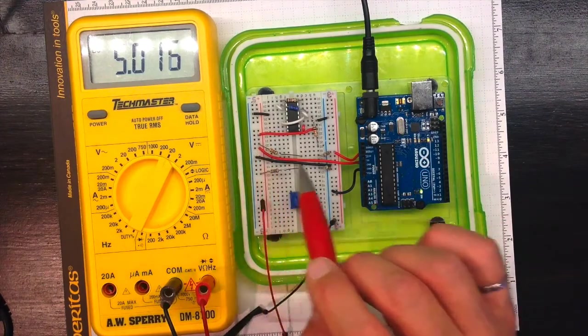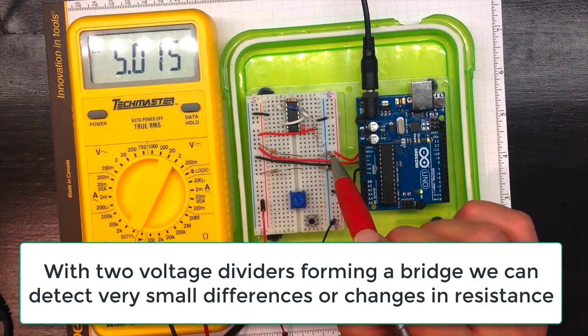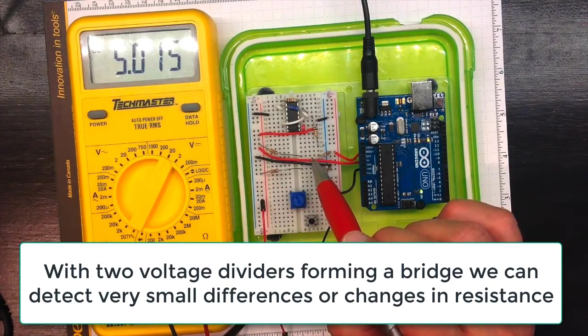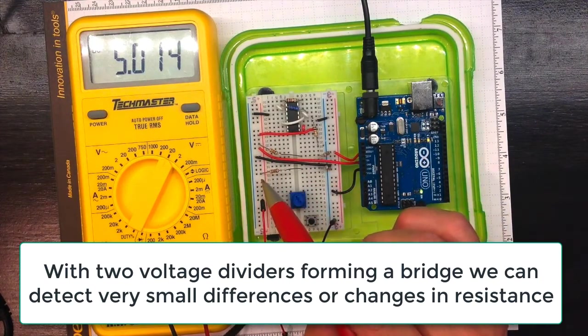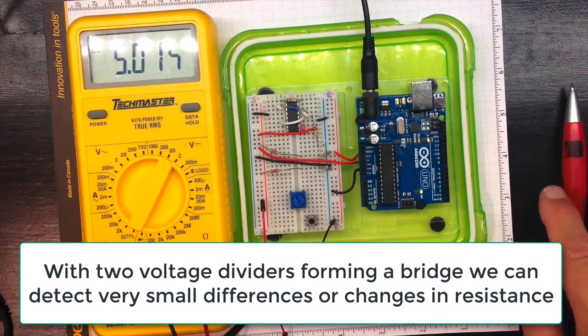So I've got two voltage dividers, going from 5 volts down to ground, so that should be 2.5 volts in between. Likewise, from 5 volts down to ground, should be 2.5 volts in between.